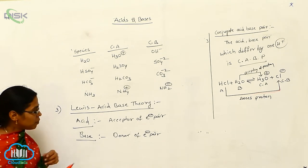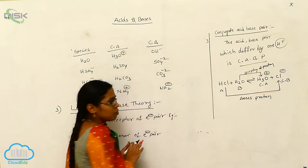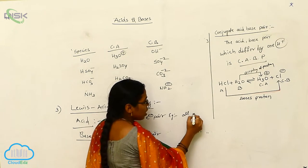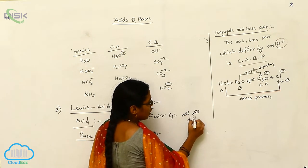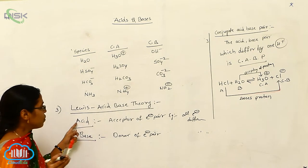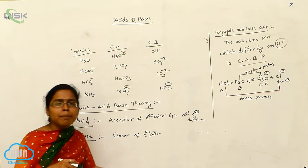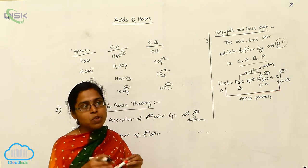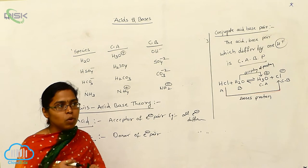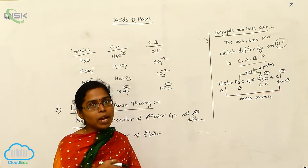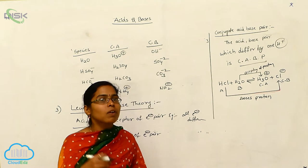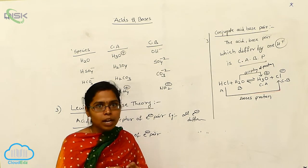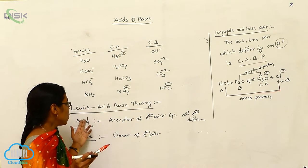Examples of Lewis acids are all electron-deficient compounds. Electron deficient means the electron density is less. Examples include compounds with empty orbitals and those with a positive charge — that means all cations. Those are considered Lewis acids.